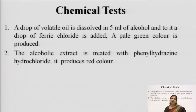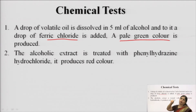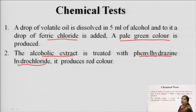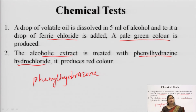For the chemical test of cinnamon, the volatile oil is taken and 5 ml of alcohol is added, then ferric chloride is added to the mixture — a pale green color is produced. Another test uses the alcoholic extract of cinnamon with phenylhydrazine hydrochloride, which produces a red color due to the formation of phenylhydrazone. So, one test gives pale green color with FeCl₃ and the second gives red color with phenylhydrazine hydrochloride.